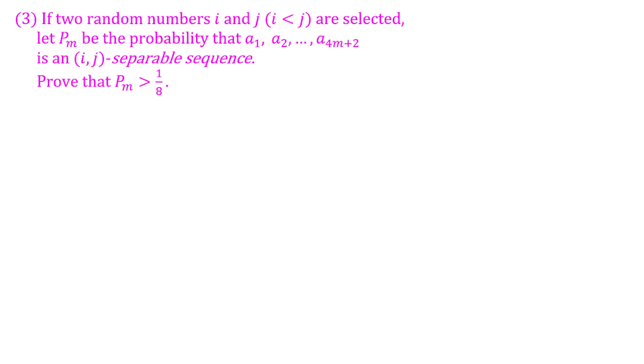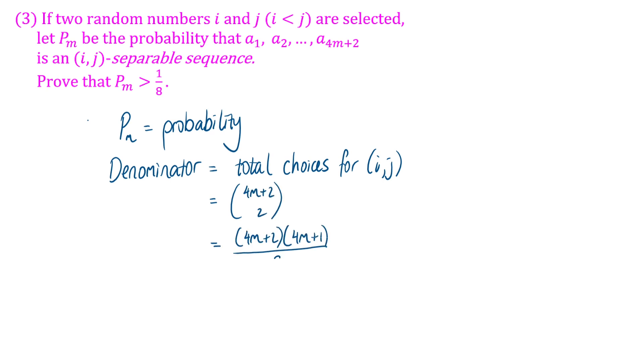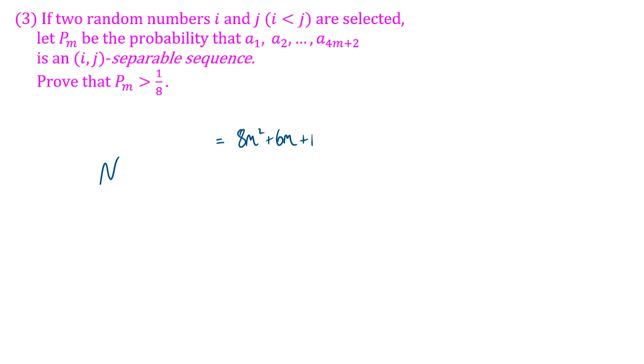Now for part three, if two random numbers i and j are selected, let Pₘ be the probability that a₁, a₂, ..., a₄ₘ₊₂ is an (i,j)-separable sequence. Prove that Pₘ is greater than 1/8. Of course, what we've done in part one and two is going to be useful here. We're trying to find a probability. If we think about what is going to be the denominator of that probability, well, that is the total number of choices for i and j. So the number of choices we'll have will be (4m + 2) choose 2, which we can calculate as (4m + 2)(4m + 1)/2.